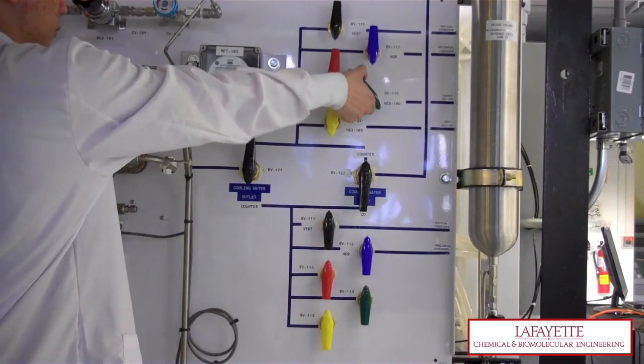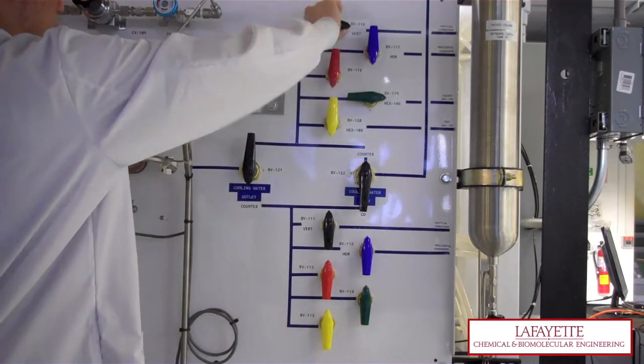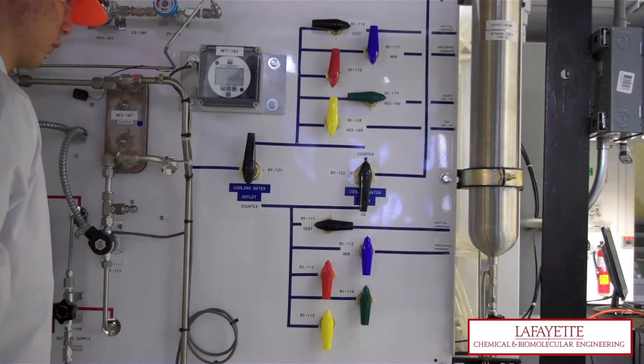Open BV119 which sends cooling water to the distillate product heat exchanger, HEX106. Open BV116 and BV111 to utilize the vertical condenser.